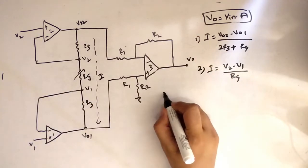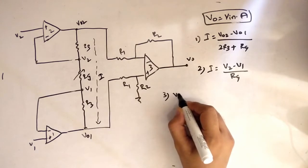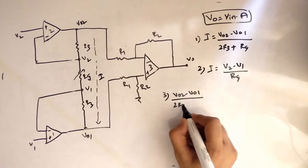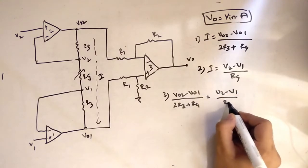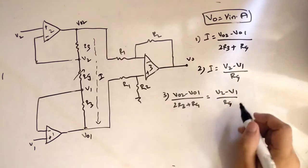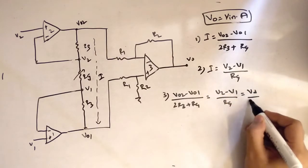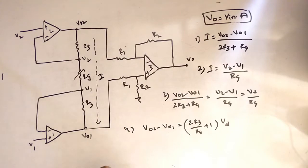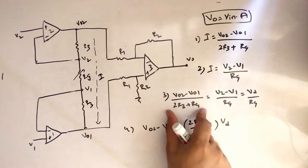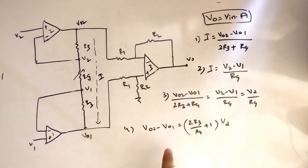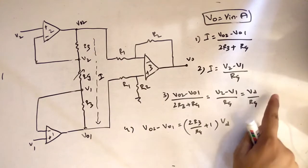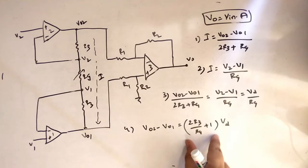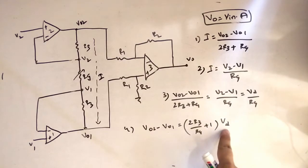Now we equate equation 1 and equation 2. So VO2 minus VO1 divided by 2R3 plus RG equals V2 minus V1 divided by RG. The difference in voltage is also known as VD. Rearranging, VO2 minus VO1 equals (2R3 plus RG) divided by RG, multiplied by VD.